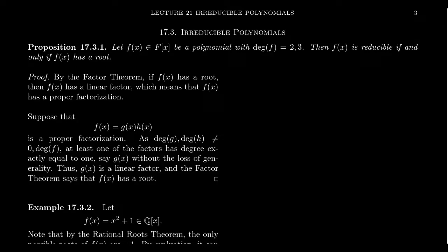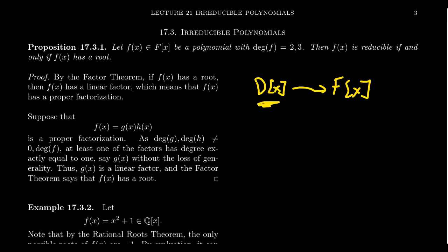One of these many strategies is to search for roots. By the factor theorem, a polynomial has a linear factor over a field if and only if it has a root. So in particular, if we have a polynomial and it has a root in the field of fractions, then in the field of fractions it will have a linear factor, and then in D adjoin X it will also have a linear factor. So even if it doesn't have a root in D adjoin X, if it does have a root in the field of fractions, that still gives us a factorization. And so because of that, we really are interested in finding roots.